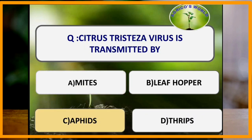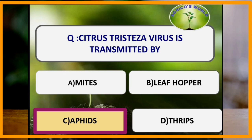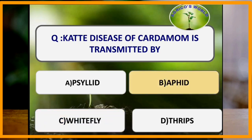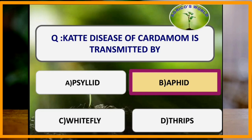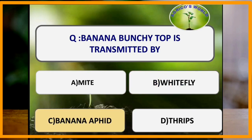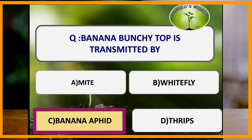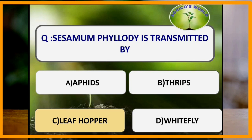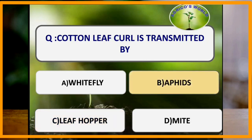Katte disease of cardamom is transmitted by aphid. Banana bunchy top is transmitted by banana aphid, Pentalonia nigronervosa. Sesamum phyllody is transmitted by leafhopper. Cotton leaf curl is transmitted by whitefly.